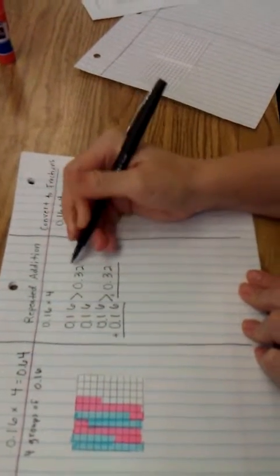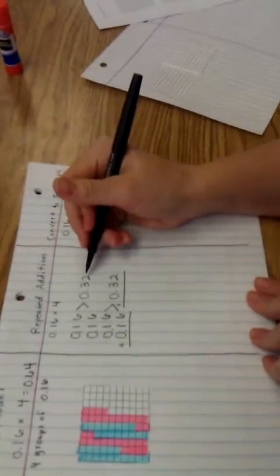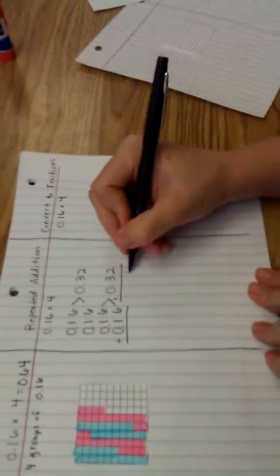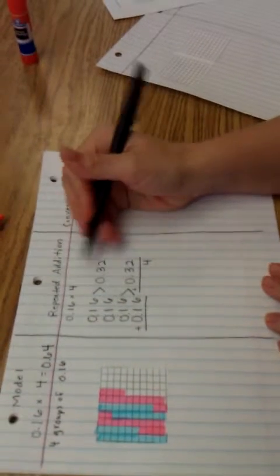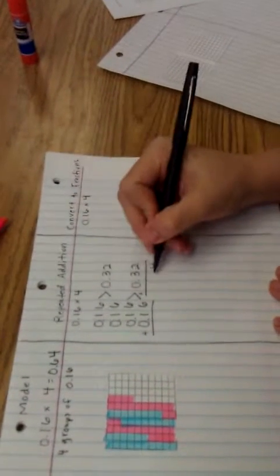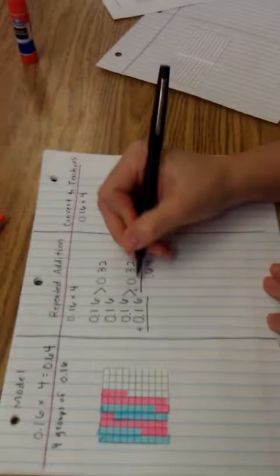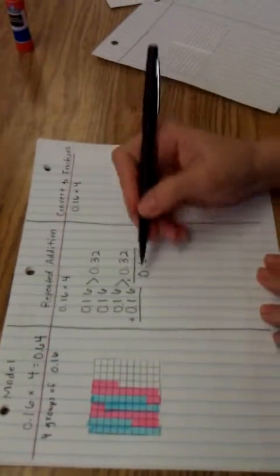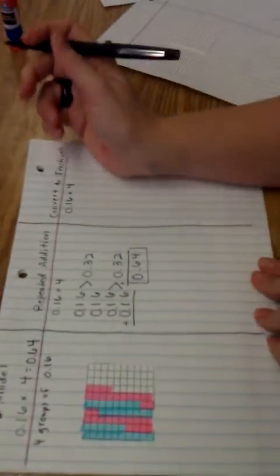And then I would add them together. Now I have two addends which makes it a little easier. 2 plus 2 is 4 hundredths. 3 tenths plus 3 tenths is 6 tenths. And 0 whole plus 0 whole is 0. So my answer is 64 hundredths.